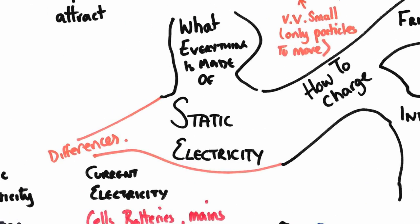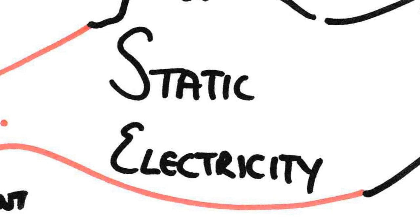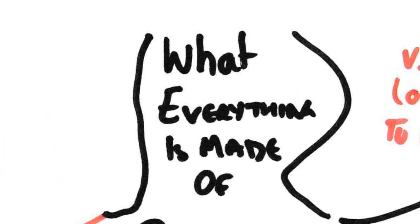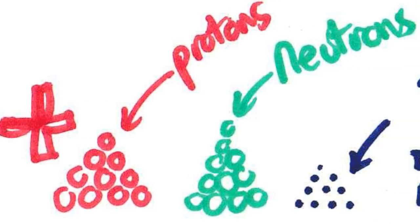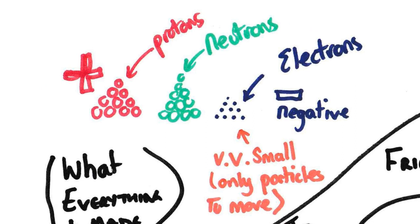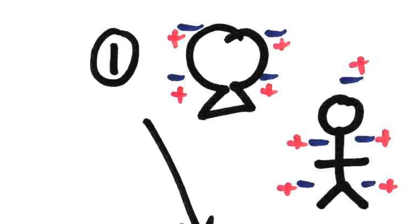In order to understand static electricity, you have to understand what everything is made up of. The entire universe is made up of protons, which have a positive charge; neutrons, which have no charge; and electrons, which are very small, negative particles. These are the only particles able to move — protons and neutrons are locked up in the nucleus of an atom, while electrons can move around, and it is those electrons that actually cause static electricity.